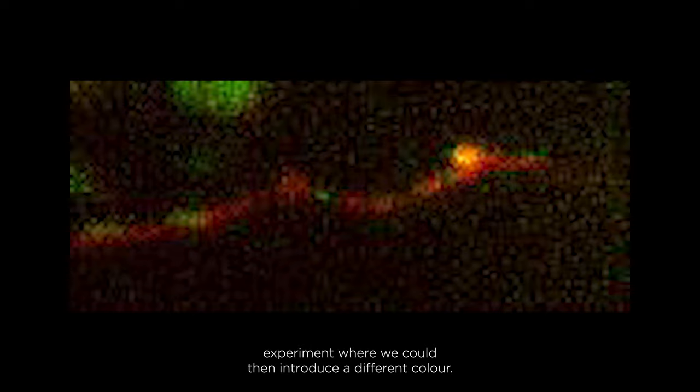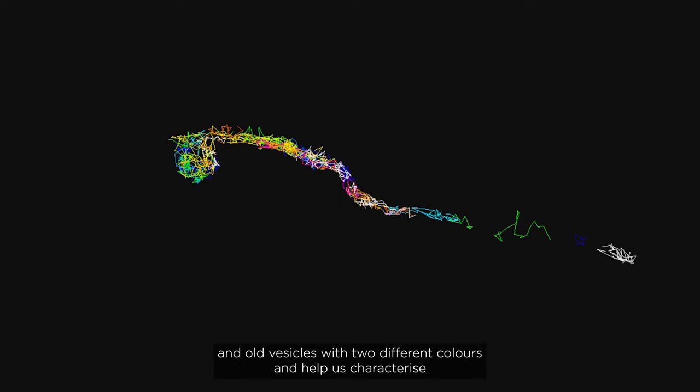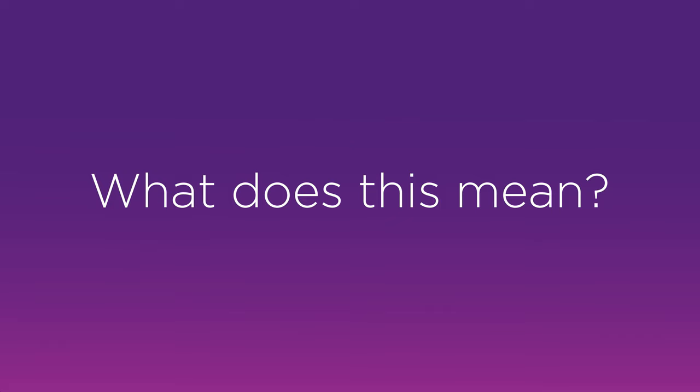Thereafter, we could do a new labeling experiment where we could then introduce a different color, and what this allowed us to do was in the same neuron label new vesicles and old vesicles with two different colors and help us characterize how they move in and out of the presynapses.